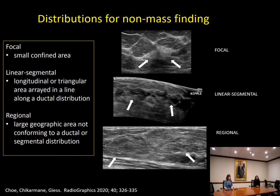Along with varying echotexture, we have different distributions. These can include focal areas, as our illustration on the top shows. Linear segmental distribution is described as a longitudinal or triangular area arrayed in a line along a ductal distribution. And then regional, which is a large geographic area not conforming to a ductal or segmental distribution. These distributions are similar to those in the BI-RADS lexicon described for breast MRI: focal, linear, segmental, and regional.